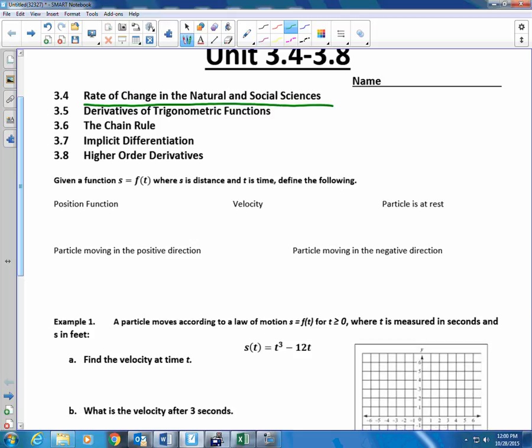Given a function s = f(t) where s is distance and t is time, define the following. s = f(t) is a position function, whereas the velocity is a rate of change. The velocity function is simply the derivative of the position function.